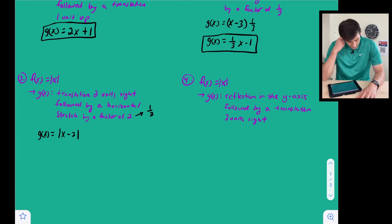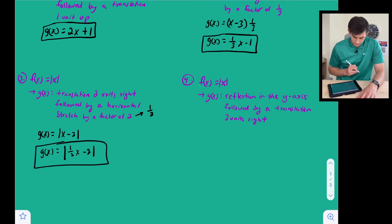So now we have absolute value of x minus two, and we're just going to follow this up now with a horizontal stretch by a factor of two. So we're just going to add in a one-half before our x, so we get absolute value of one-half x minus two. And that would be our final function.